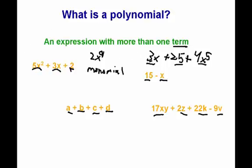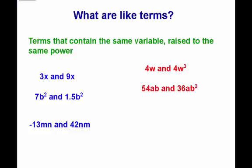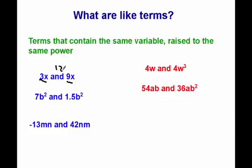When we're adding and subtracting polynomials, all we are doing is combining like terms. That begs the question: what are like terms? Like terms are terms that contain the same variable raised to the same power. For example, 3x and 9x both have the same variable, x, and it's both to the same power — the first power. So they are like terms. I can combine them and get 12x.